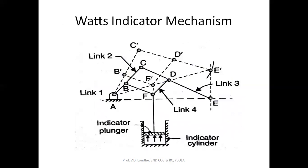Next is the Watt's indicator mechanism. Here the first link is the fixed link, the second and third links act as levers, and the fourth is the connecting link. There is no crank; links two and three act as levers. Link four is attached to the piston rod and piston, also called the plunger.